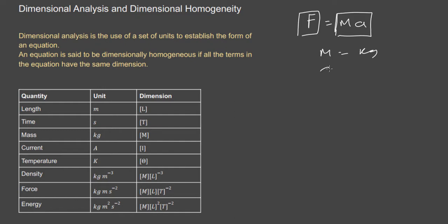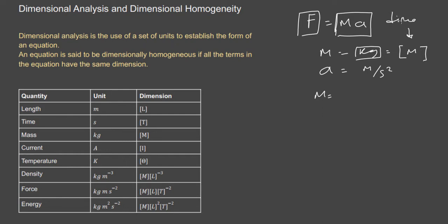Dimension tries to say: instead of using these specific units, use a symbol that represents the unit. This is useful because mass can be represented in different forms — kilogram, gram, and others. Instead of worrying about the exact unit, you just use M to represent the dimension of mass. Dimension is a placeholder for a unit — it doesn't care about the specific unit used.